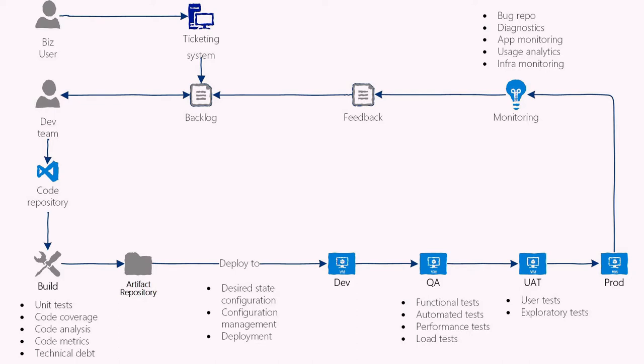After the build, the output — for example, a web deployment file for a web application or an EXE for a desktop app — gets put into what we call an artifact repository. This stores all your different binaries and builds, so you can roll back to previous builds if needed. Then deployments happen into, in this example, four different environments.